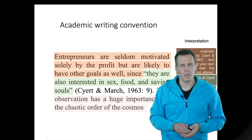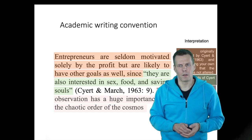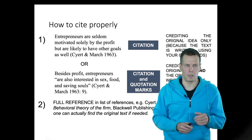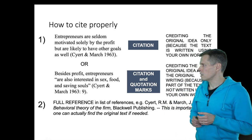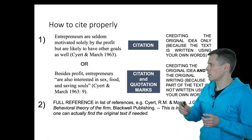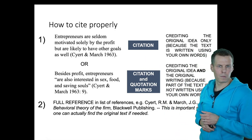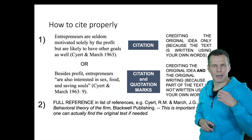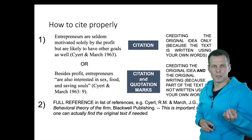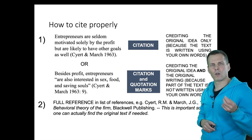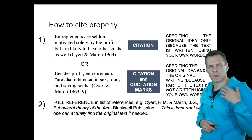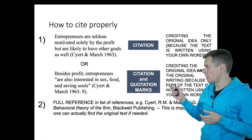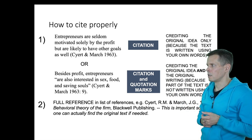There are basically two citation practices. We have citation — typically in parentheses with the author's name, comma, year — and this is when you paraphrase an idea. So you have your own text that expresses some other person's idea, and then you have the citation at the end.